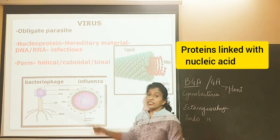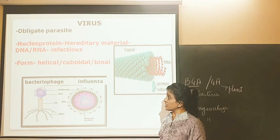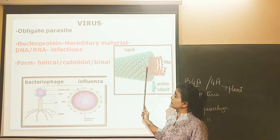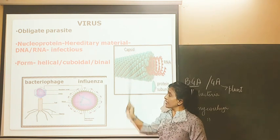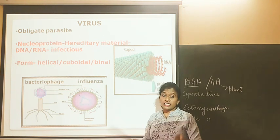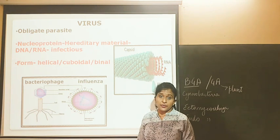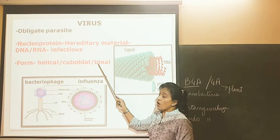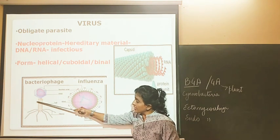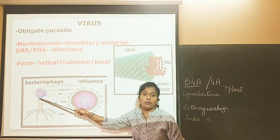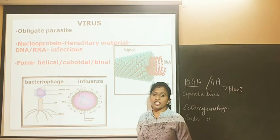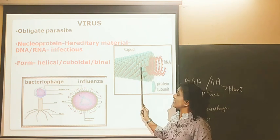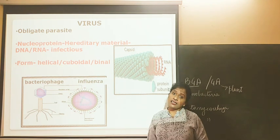There are different forms of viruses seen in nature: helical, cuboidal, or binal. Cuboidal indicates not exactly cube-shaped but they can be polyhedral or circular. Binal viruses have both helical and cuboidal structure — for example, bacteriophage. Tobacco mosaic virus is the helical type of virus.